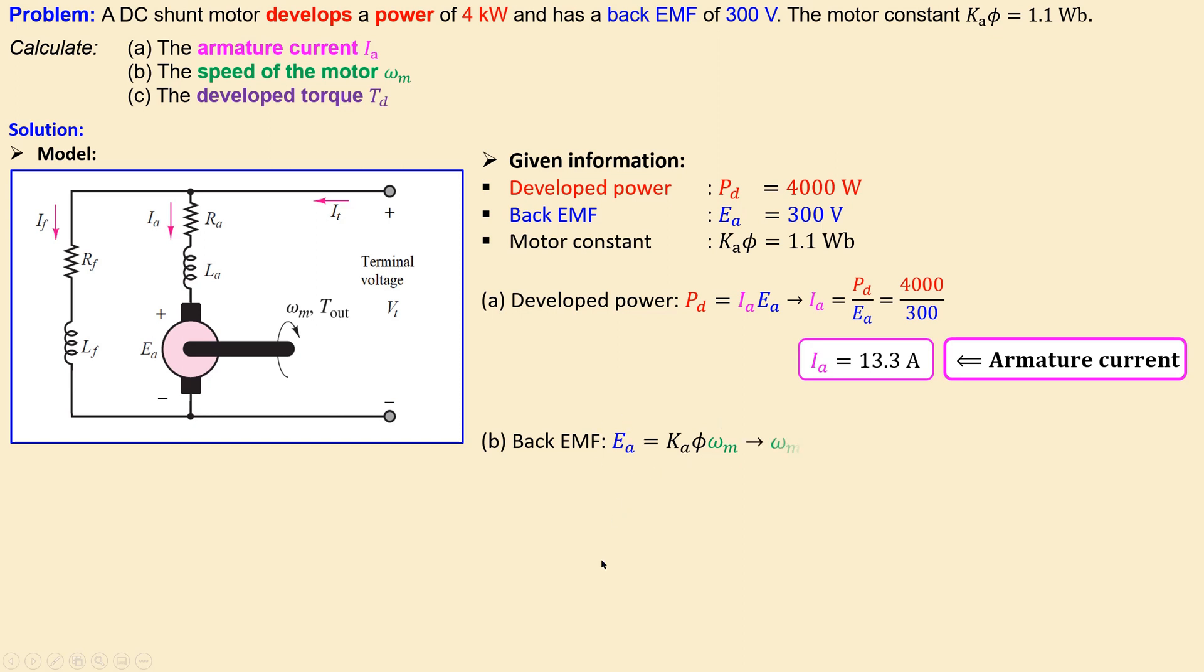Now rewriting this you will get your speed of your motor: 300 over 1.1. That will be then 273 radians per second. Of course you can convert this to rotation per minute but that is now in omegas and this will be our motor speed.